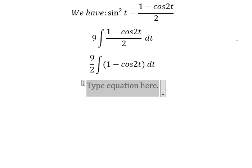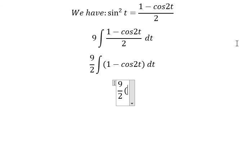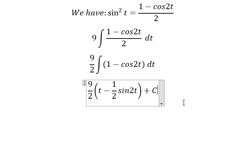The integration of 1 is t. The integration of cos 2t we have 1 over 2 sine 2t, and we put c in here.